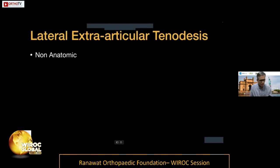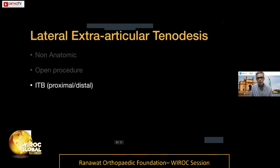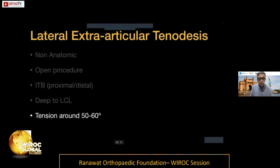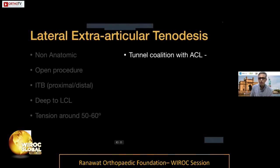The lateral extra-articular tenodesis, which is more popular, is a non-anatomic open procedure utilizing the iliotibial band — either proximal or distal. The graft must be passed deep to the LCL, which is the main differentiating point from the ALL reconstruction. It is tensioned at 50–60 degrees of knee flexion. Using superficial implants reduces tunnel collision risk with the ACL tunnel, and it is a relatively cheaper procedure.